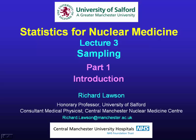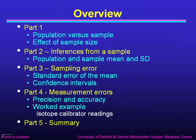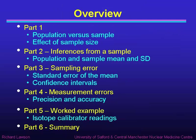This is the third lecture in my series of statistics for nuclear medicine, in which I'm going to be talking about sampling. In this first part, I'll talk about the population versus the sample, and in particular, the effect of sample size. In the second part, I'll talk about how we can make inferences from a sample, discussing the difference between population and sample mean and standard deviation. In part three, I'll talk about sampling error, the standard error of the mean, and confidence intervals. In part four, we'll deal with measurement errors, talking about the difference between precision and accuracy. And in part five, we'll do a worked example based on isotope calibrator readings.